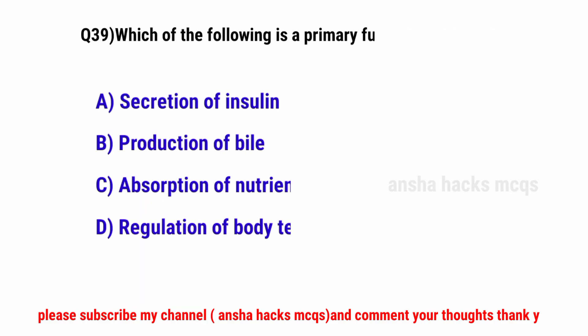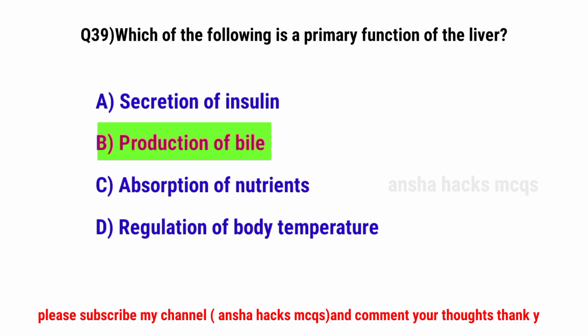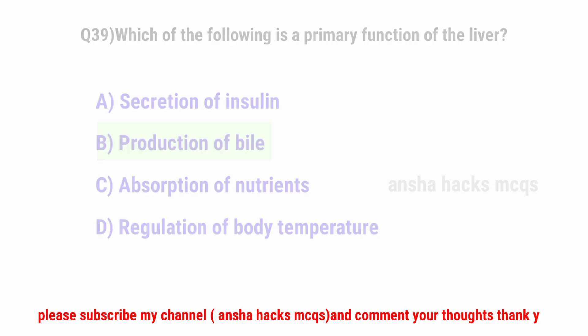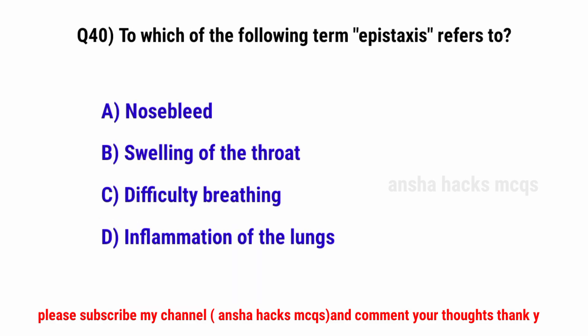Question No. 39. Which of the following is a primary function of the liver? The correct option is B: Production of bile.